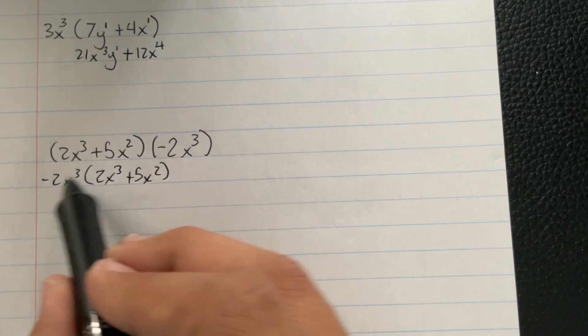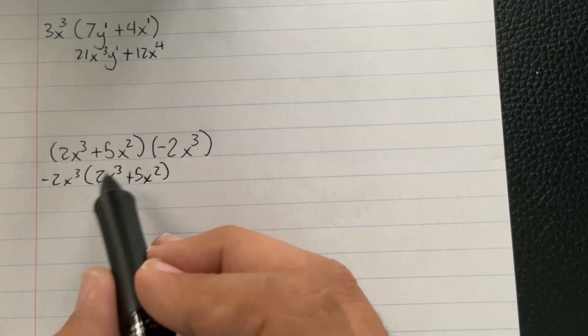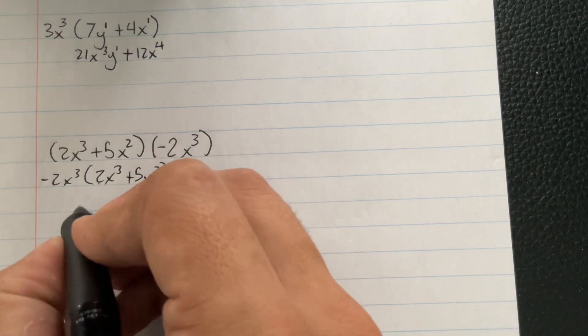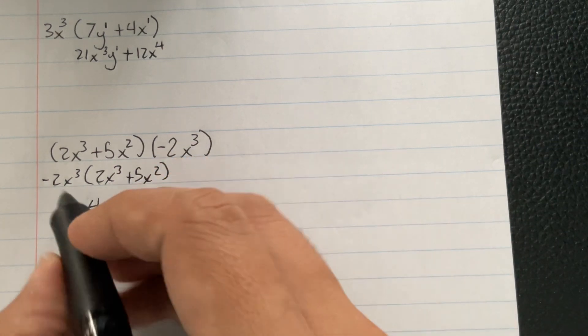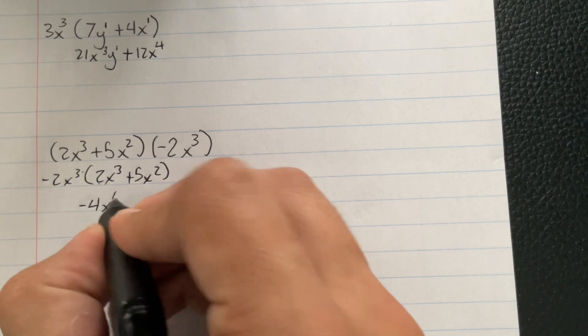So it's going to be negative 2 times 2x³. So negative 2 times 2 is going to be negative 4. x³ and x³ are going to make x⁶.